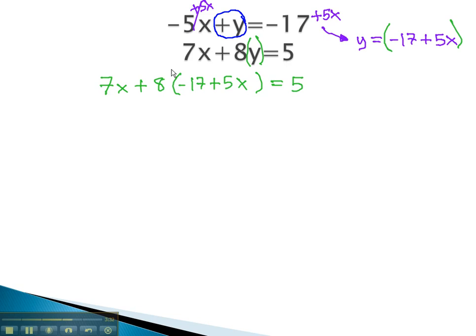And again, we solve this equation by first distributing the 8. 7x minus 136 plus 40x equals 5. Combining like terms, we find 47x minus 136 equals 5.